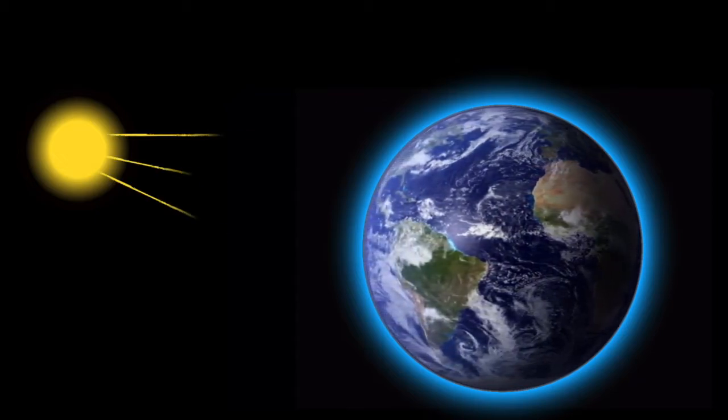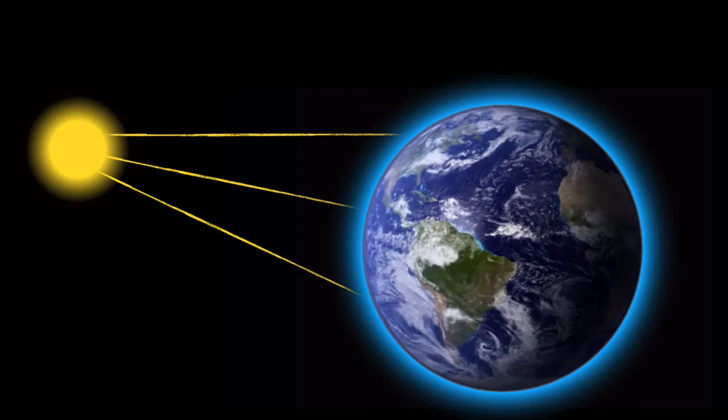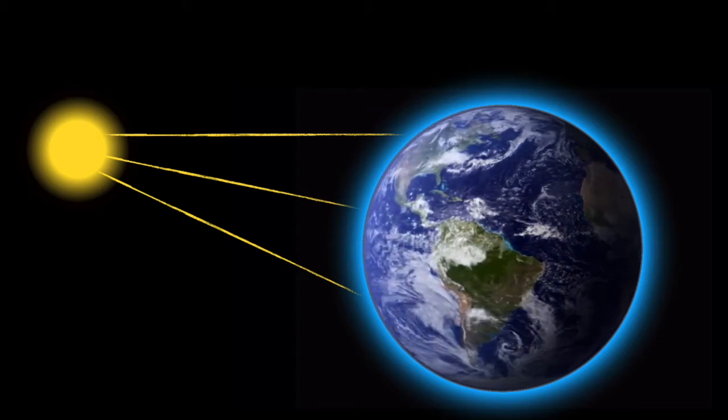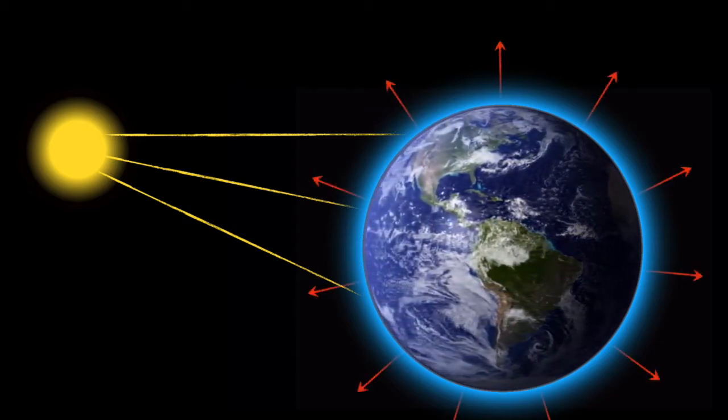The Earth gets all of its energy from sunlight and the only way it can get rid of energy is by radiating infrared waves into space.